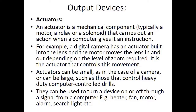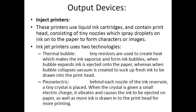Depending on the level of zoom required, it is the actuator that controls this movement. Actuators can be small, as in the case of a camera, or very big, such as those which control heavy-duty computer-controlled drills or hydraulic jacks that open and close automatic doors — like the main gates of large houses. They can be used to turn a device on or off through a signal from the computer, for example a heater, fan, motor, alarm, or searchlight.